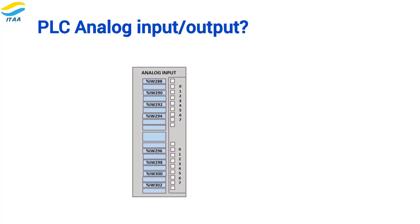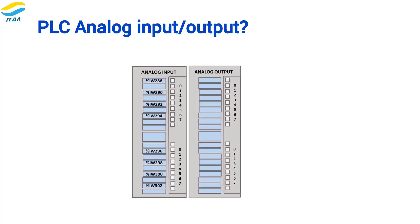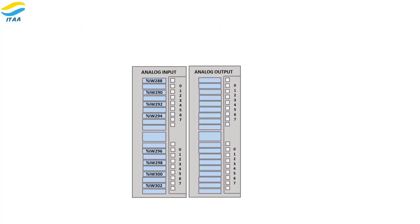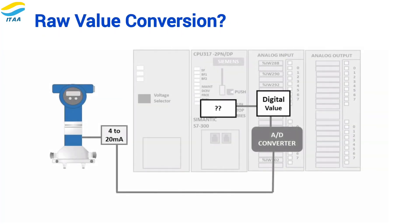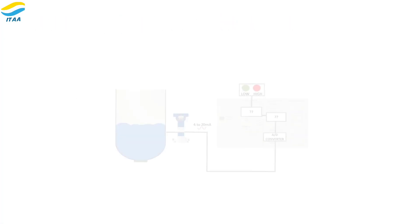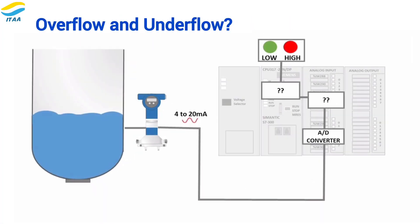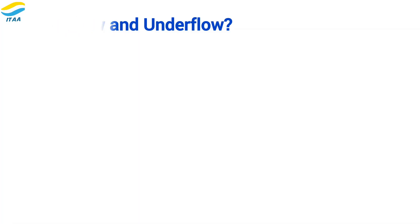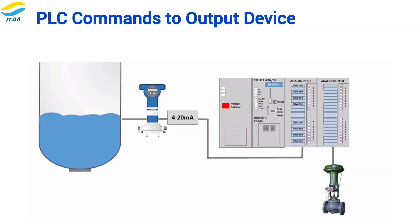By the end of this video, you'll understand how to handle PLC and DCS analog input and output, how raw sensor values are turned into useful information, why the accuracy of measurements called bit resolution is important, how we check for problems like overflow and underflow, and how the PLC sends commands to control devices that manage our processes.